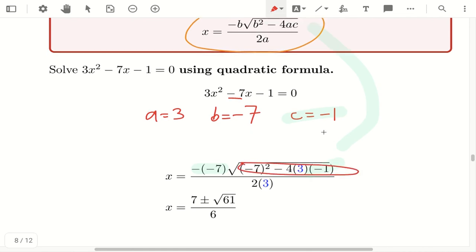Do it step by step. So you put into your calculator 49 - 4(3)(-1). So it's +12. So what you get is √61. Then minus minus 7 is positive 7.